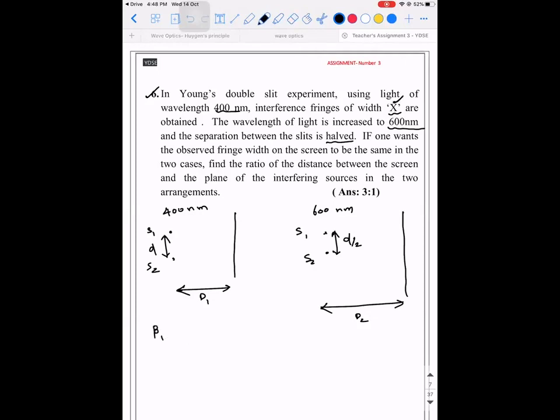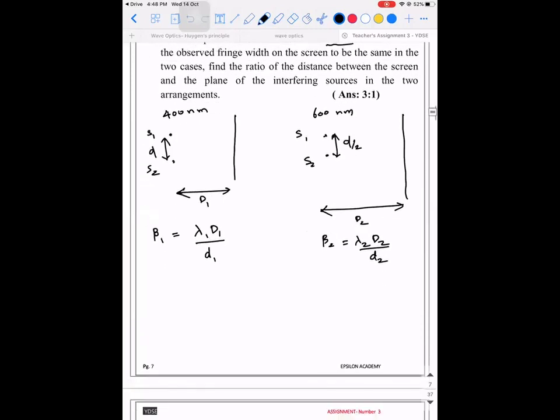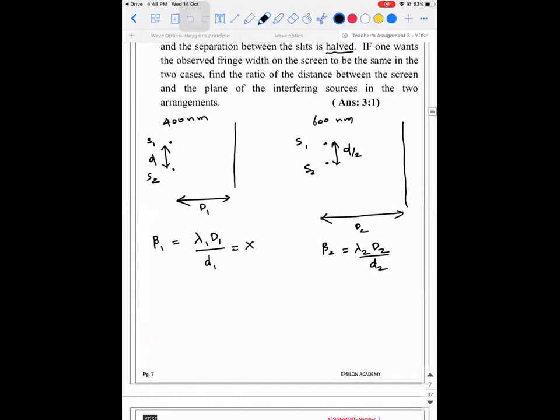Beta 1 is equal to lambda 1 into capital d1 divided by small d1. Beta 2 is lambda 2 into capital d2 divided by small d2. Beta 1 is expected, beta 1 is x and beta 2 is expected to be x. So what can we conclude from this?